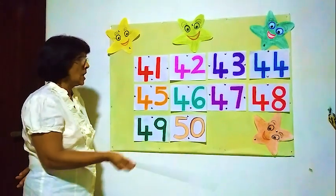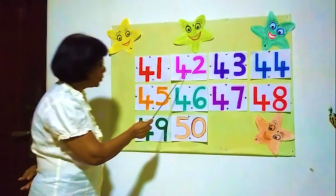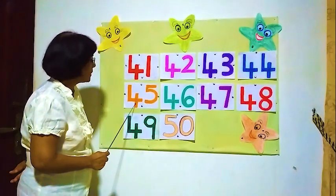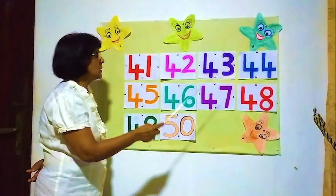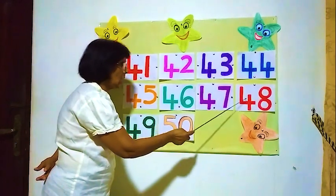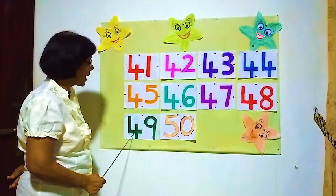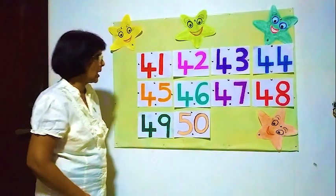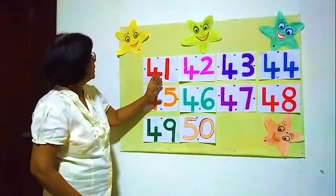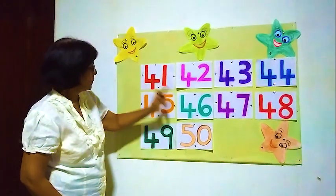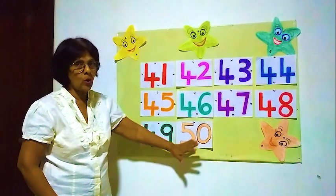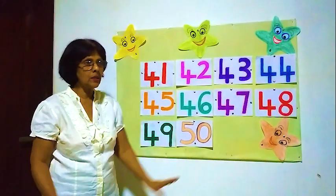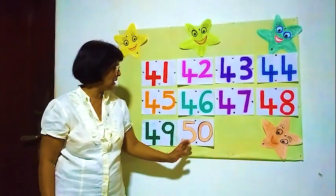Now again we'll count: 41, 42, 43, 44, 45, 46, 47, 48, 49, 50. Now we count from 41 to 50. Now we know from 0 to 50 — all the numbers up to 50. Right?